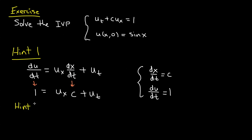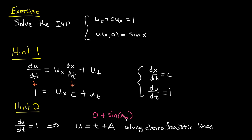That's hint 1, so go ahead and pause if you want to continue. Here's hint 2. The fact that du/dt is 1 means that along characteristic lines u changes as t plus some constant. And this is along characteristic lines. So at time t equals 0, the t will become 0, and the a will become simply the initial condition that we have, which is sin x. And remember that sin x is given by x minus ct, wherever I am in the whole x-t plane.